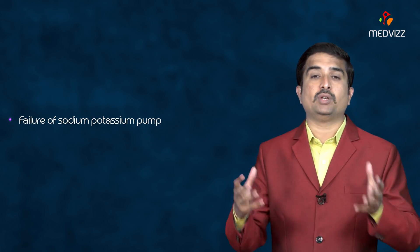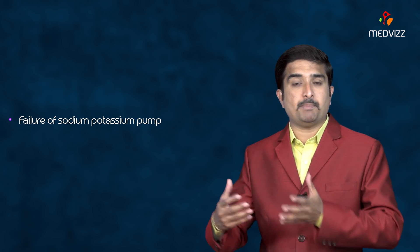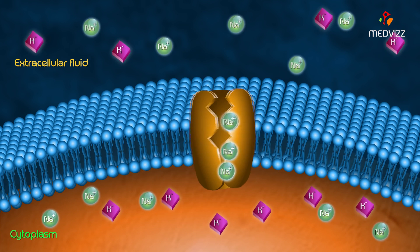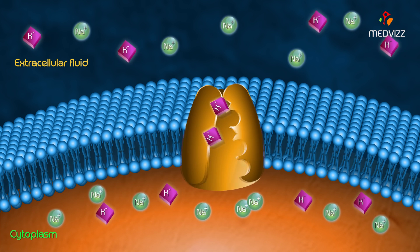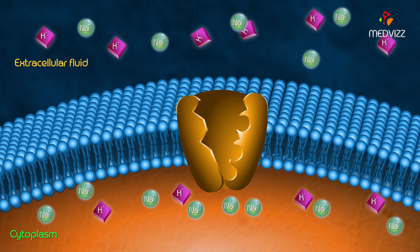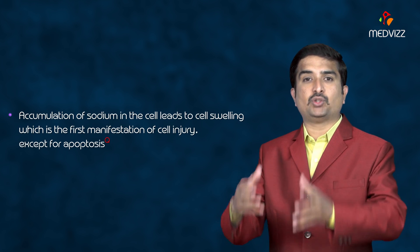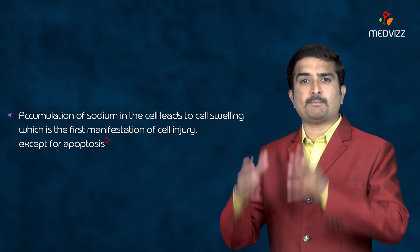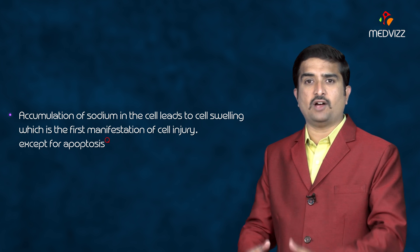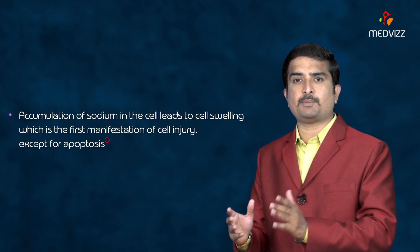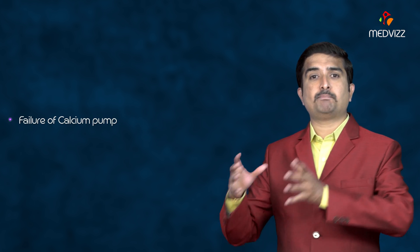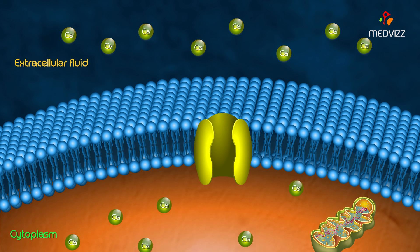Failure of the sodium-potassium pump due to decreased ATP causes intracellular accumulation of sodium and efflux of potassium. Accumulation of sodium in the cell leads to cellular swelling, which is the first manifestation of reversible cell injury, except in apoptosis.